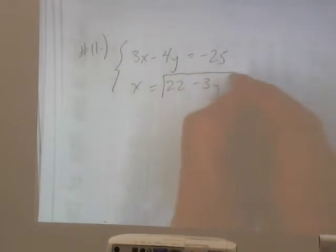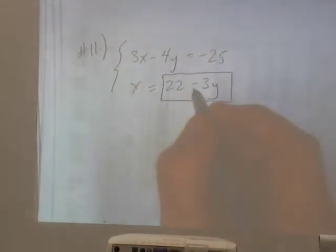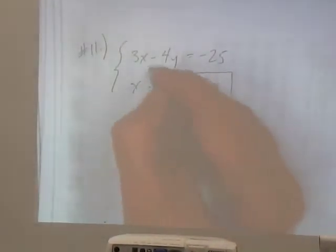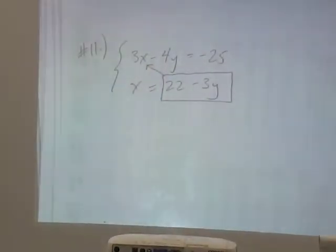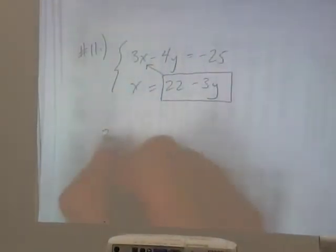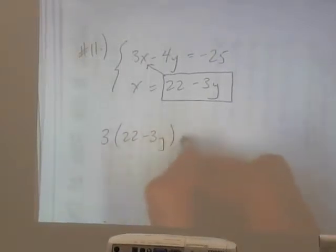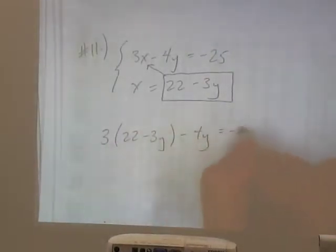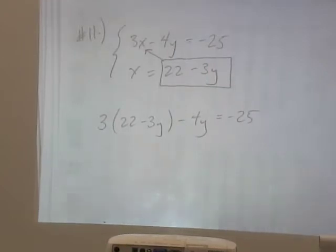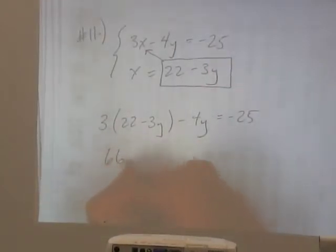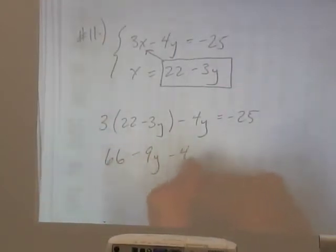So we took your substitution. We know that's equal to x, so I'm going to plug it in up there. So I have 3 times 22 minus 3y minus 4y is equal to negative 25. Distribute. Distribute. 66 minus 9y minus 4y.